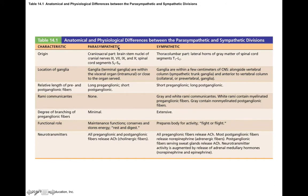The parasympathetic nervous system is the craniosacral division, involving cranial nerves 3, 7, 9, and 10, as well as some sacral spinal nerve segments. The sympathetic nervous system involves spinal nerves T1 through L2.